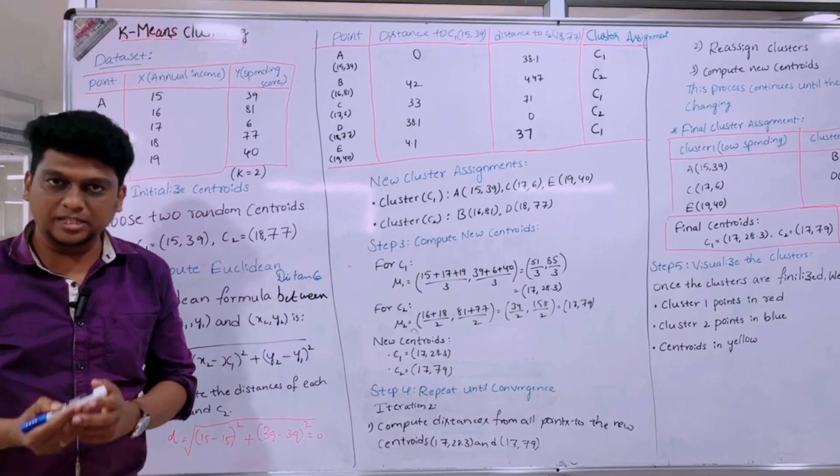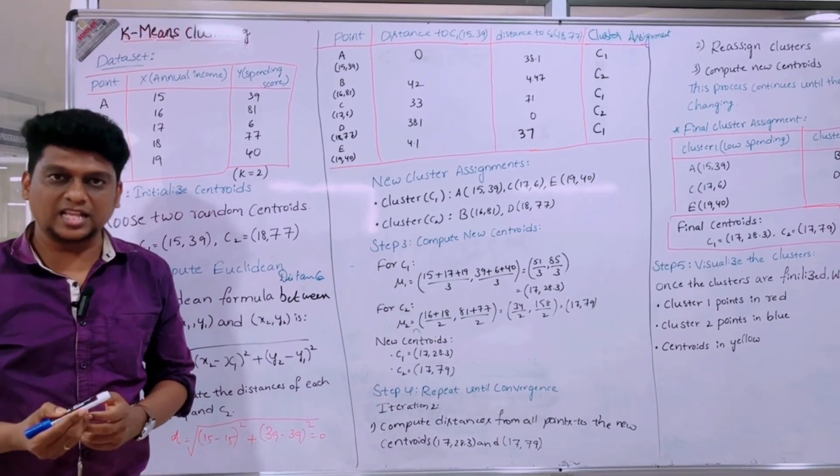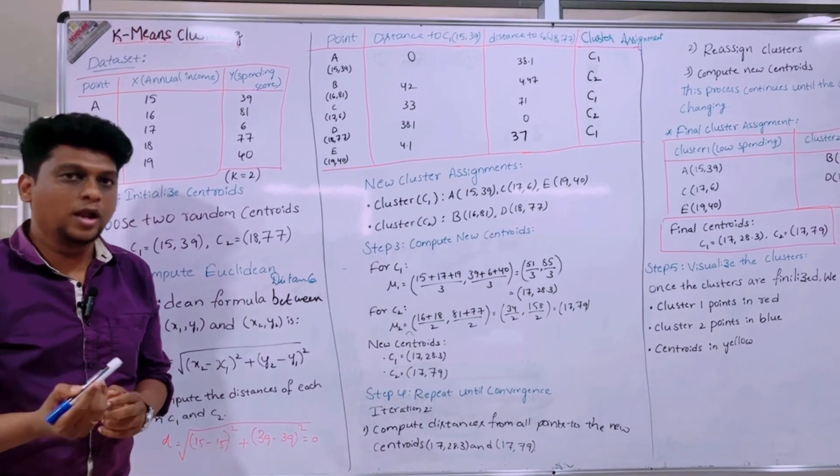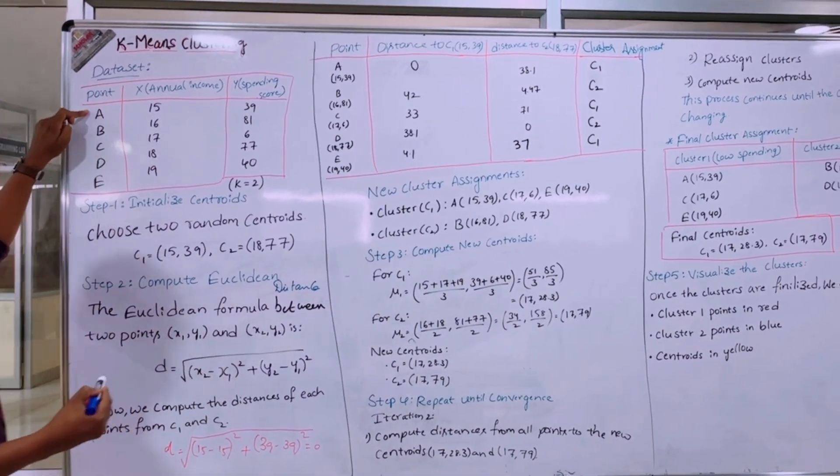So the main application of using this k-means clustering is customer segmentation, anomaly detection, image classification, etc. So now take a sample dataset. Here in this dataset there are five points.